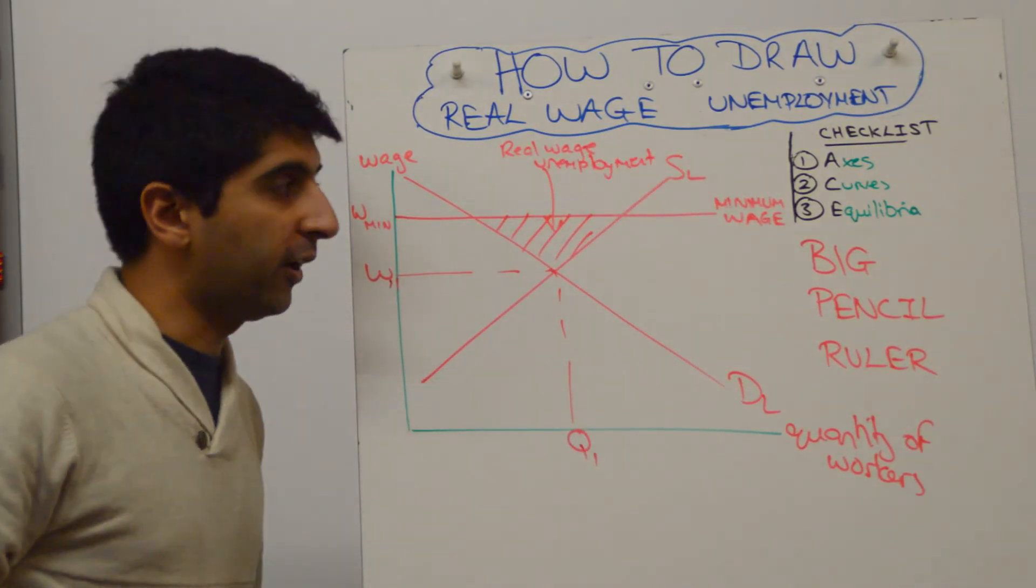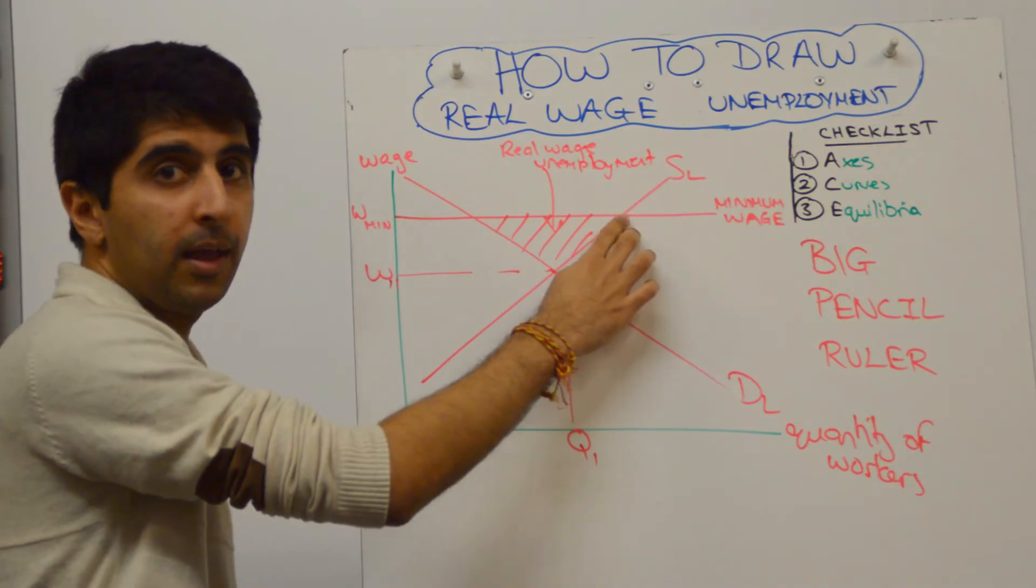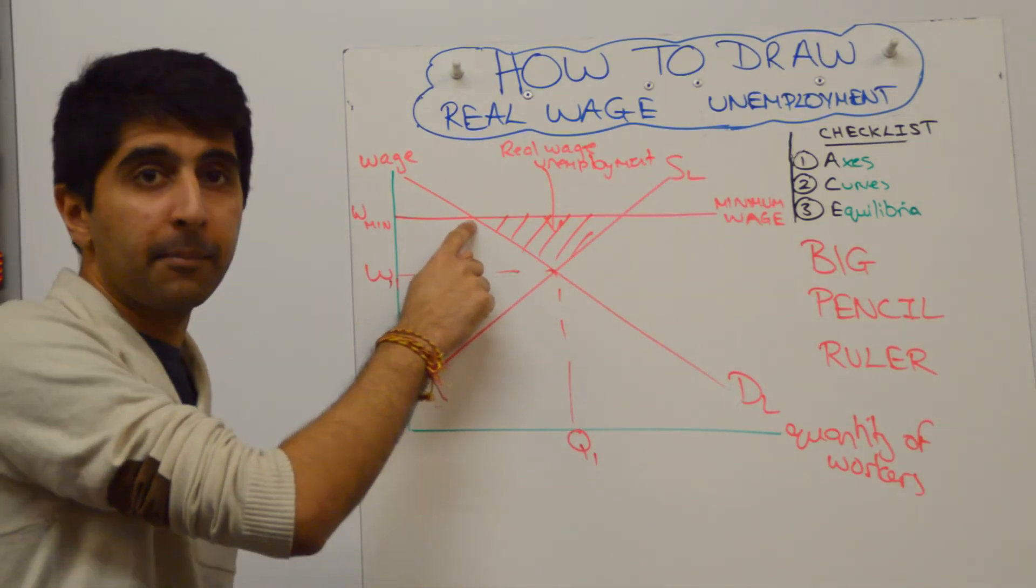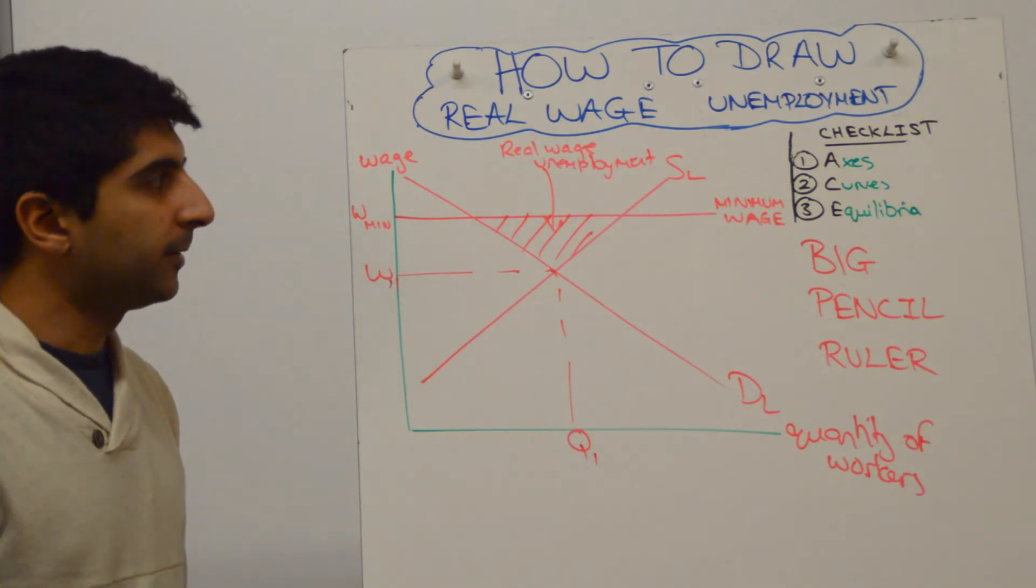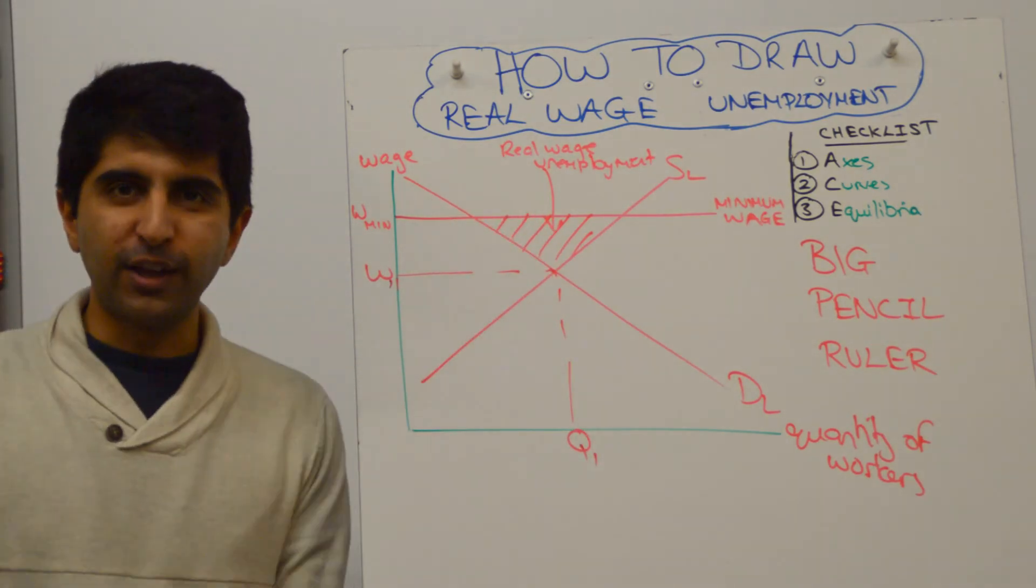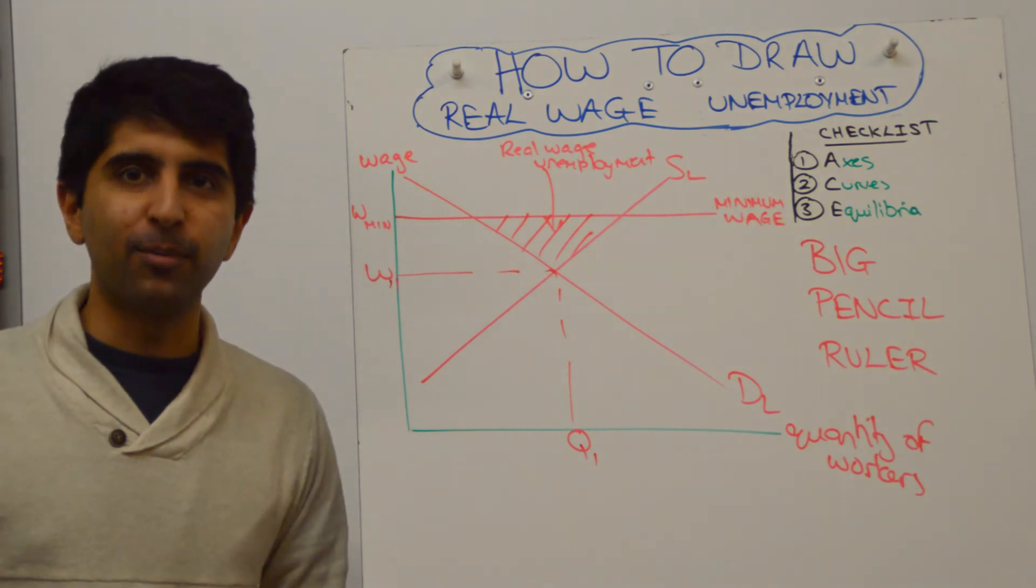And that's clear enough on the diagram, because supply of labour is there, but firms are only dividing that much labour, hence you have an excess supply. Those workers will be unemployed as a result. That's all you need to draw, and you've shown real wage or classical unemployment right there.